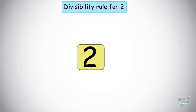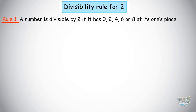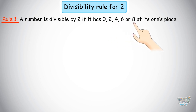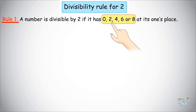Let's first start with 2. We need to find whether or not a number is divisible by 2. What is the rule? A number is divisible by 2 if it has 0, 2, 4, 6, or 8 in its ones place. Any number that ends with any of these 5 numbers is divisible by 2. You just need to remember these 5 numbers because they are all divisible by 2 themselves.